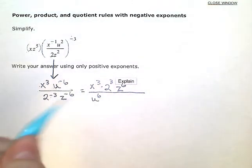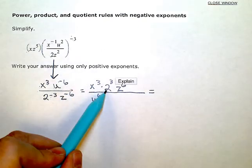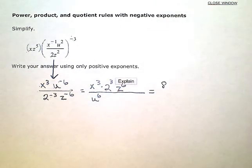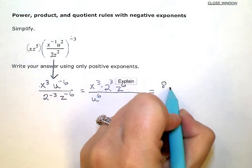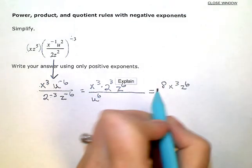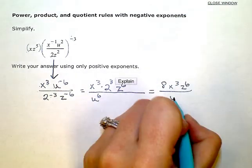So now, we'll just do one more step. This 2 to the 3rd is just 2 times 2 times 2, or 8. So I'm going to replace that 2 to the 3rd with an 8. Then I have x cubed and z to the 6th all over u to the 6th.